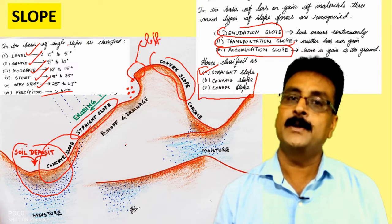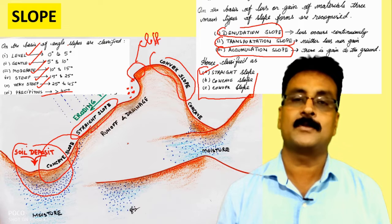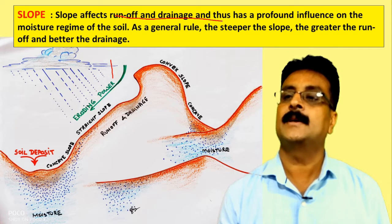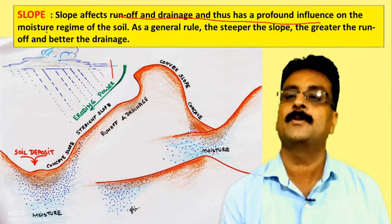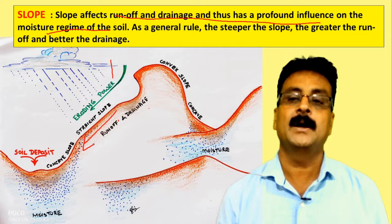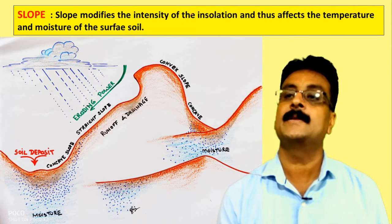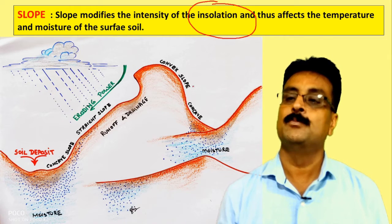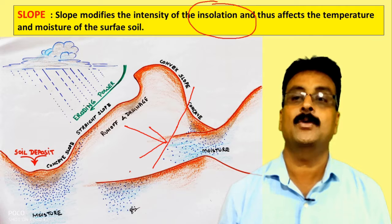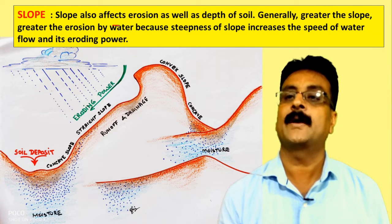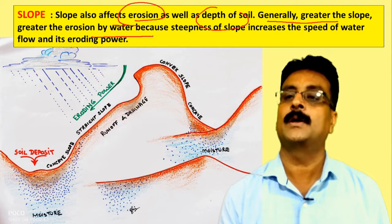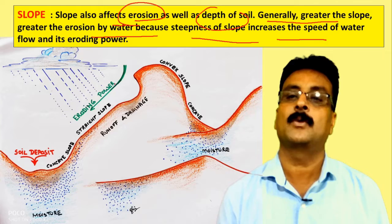Runoff, drainage, and moisture are all dependent on the type of slope — straight, concave, or convex. Slope affects runoff and drainage, and thus has a profound influence on the moisture regime of the soil. As a general rule, the steeper the slope, the greater the runoff. Slope also modifies the intensity of insolation from the sun, affecting moisture of the surface soil. Greater slope means greater erosion by water, because steepness increases the speed of water flow and its eroding power.